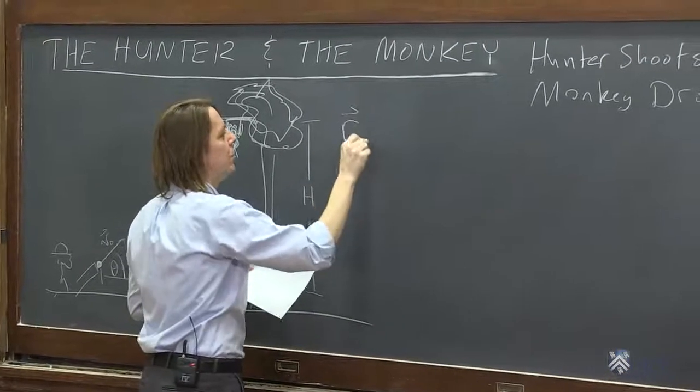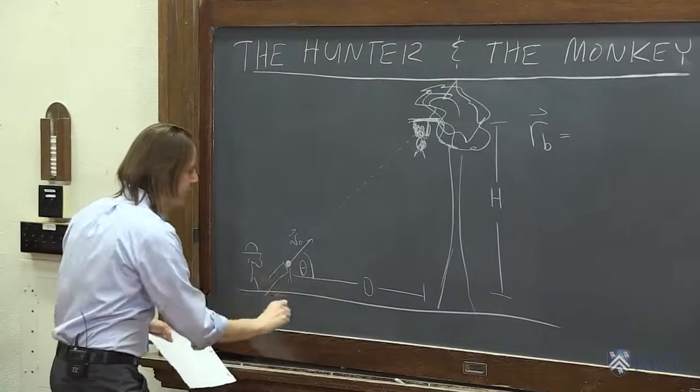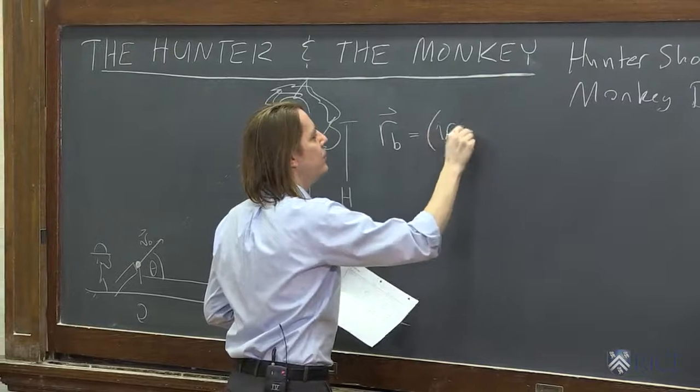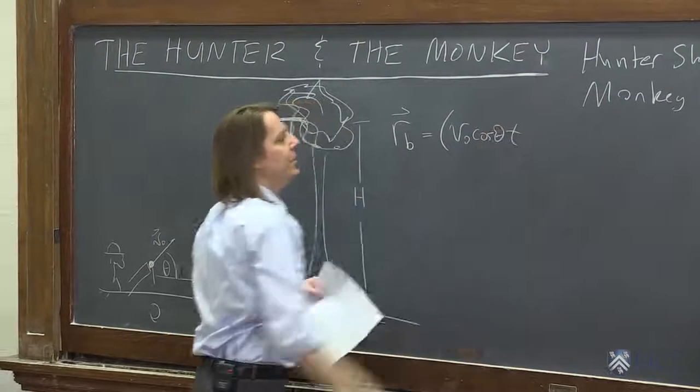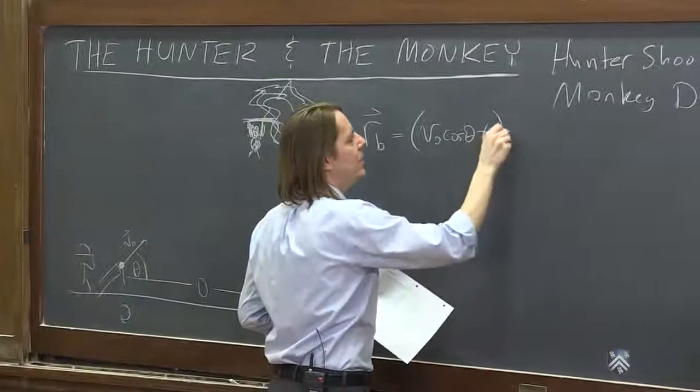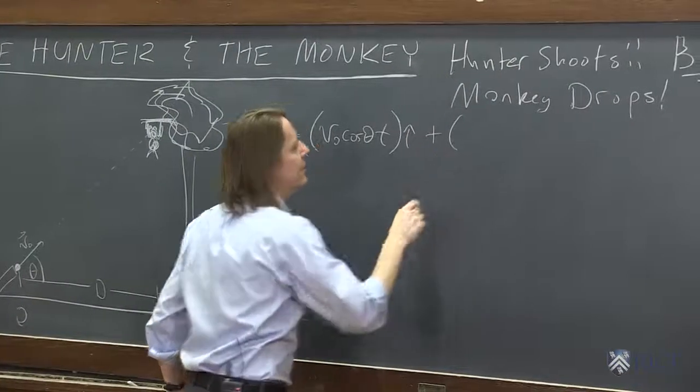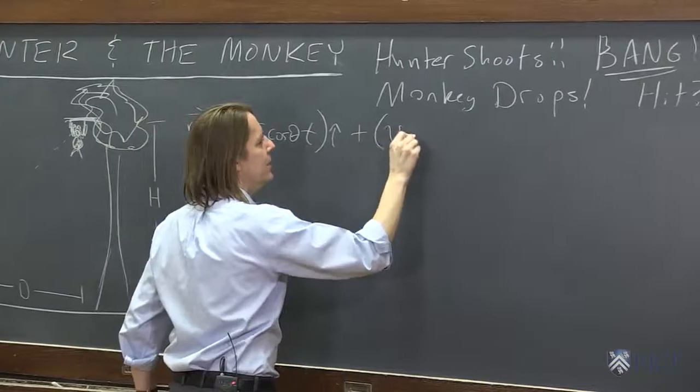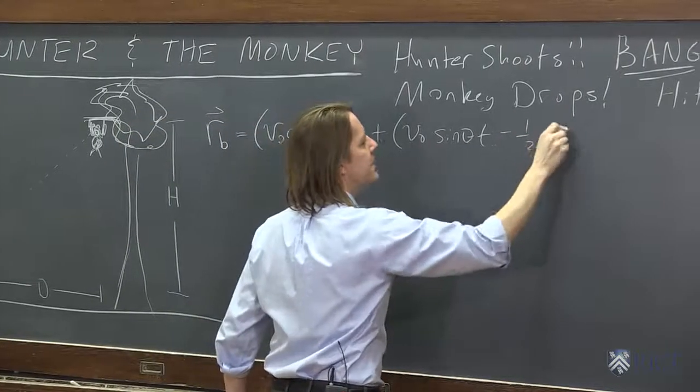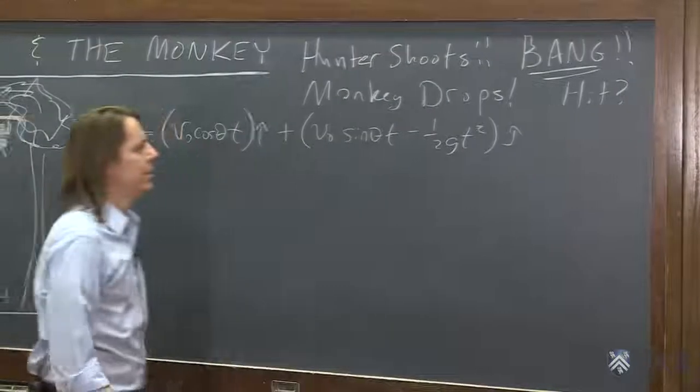So let's do that. So here is the position vector, rb, of the bullet. Its x component has no initial x position. We'll assume that this is the origin, zero position. It has an initial x velocity, v-naught cosine theta, times time. So it starts out at zero, v-naught cosine is the horizontal component times time. And that's all it has in that direction. There's no acceleration in the horizontal. In the vertical, it has zero offset. It has v-naught sine theta t, that's its initial y velocity, and it does drop at one-half gt squared in the y because gravity pulls down the bullet, j hat.